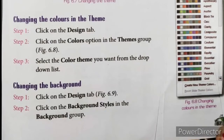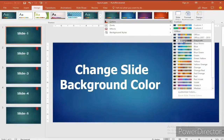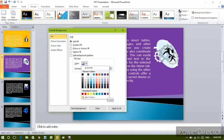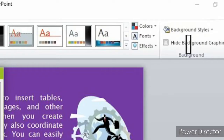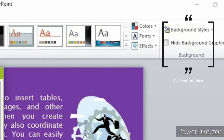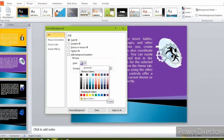Changing the background. You can change the background of the slide. Aap ne jo presentation banai hai, usme aap slides ka background change kar sakti hai. Aap ek hi background ko sabhi slides pe apply kar sakti ho, ya aap sabhi slides ko different background pe apply kar sakti ho. Steps to change the slide background: click on the Design tab, click on Background Styles in the Background group, click on Format Background. The Format Background dialog box appears.